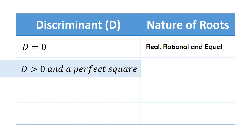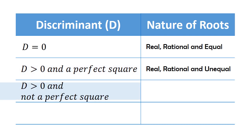Second, if the discriminant is greater than zero and a perfect square — or simply put, the discriminant is positive and a perfect square — the nature of the two roots are real, rational, and unequal.